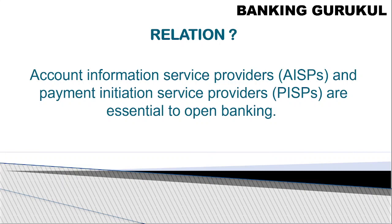What is the relationship between Account Information Service Providers and Payment Initiation Service Providers? Take the example of Google Pay or Phone Pay — you can see your bank account balance through Google Pay, but your balance is held in another bank, such as HDFC or ICICI. AISPs provide account information only; they will show you your balance but nothing more.